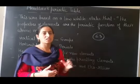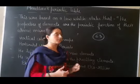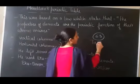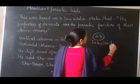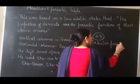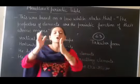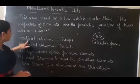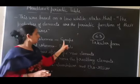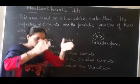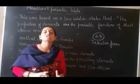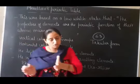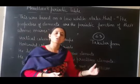We discuss the advantages first. The table creates particular vertical columns from left to right, named groups. The vertical columns shown top to bottom are named groups, while the horizontal columns are named periods.